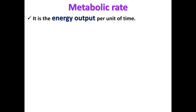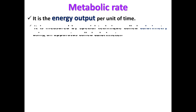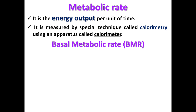Metabolic rate is the energy output per unit of time. It is measured by a special technique called calorimetry, using an apparatus called a calorimeter. Basal Metabolic Rate (BMR) is the minimum amount of energy required by the body to maintain life at complete physical and mental rest and in the post-absorptive state.